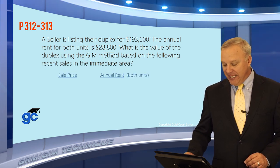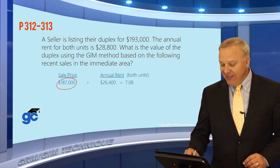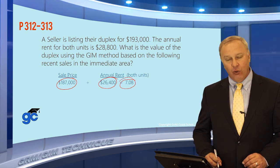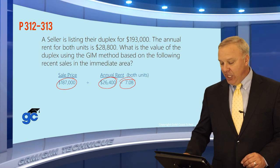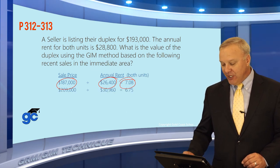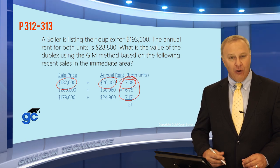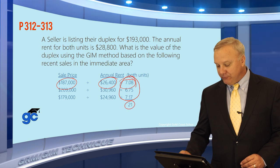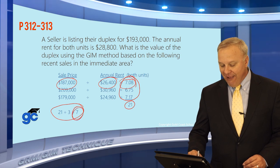When we divide the sales price by the annual rent, that tells us the property sold for a certain number of times its annual rent. For example, property one gives us 7.08. If we do that for each of the properties, we get a gross income multiplier for each sale. We add those together to get 21, divide by 3, and the average gross income multiplier for this area is 7.